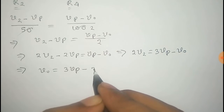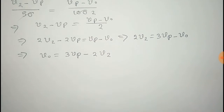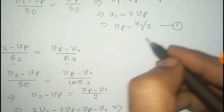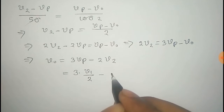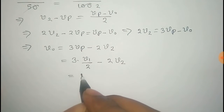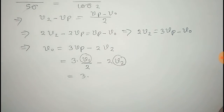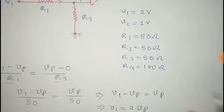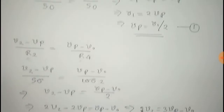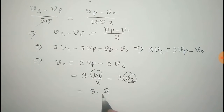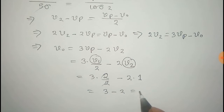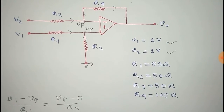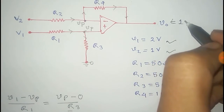Solving for V0: V0 = 3·Vp - 2·V2. Now substituting Vp = V1 / 2 from the first loop equation: V0 = 3·(V1/2) - 2·V2. With V1 = 2V and V2 = 1V: V0 = 3·(2/2) - 2·(1) = 3 - 2 = 1 volt. So the output of this op-amp circuit is exactly 1 volt.